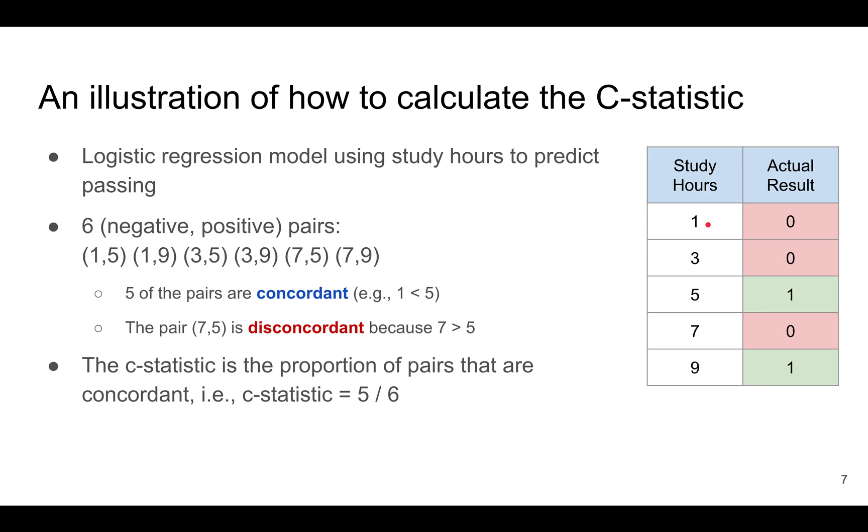Five of the pairs are concordant. For example, one and five is concordant. Three and five is concordant. One and nine is concordant. Three and nine are concordant. Seven and five are not concordant. This is discordant. But seven and nine is also concordant. So basically, five out of the six possible pairs are concordant, which means the C statistic is five over six.